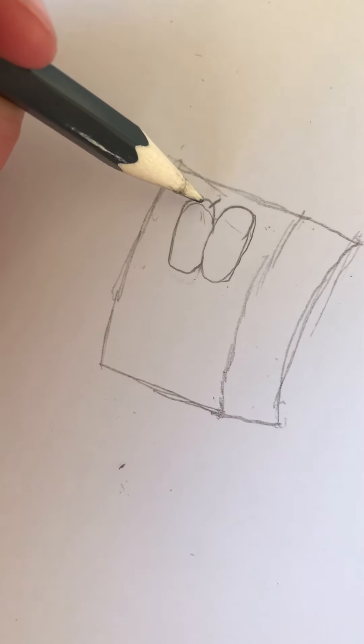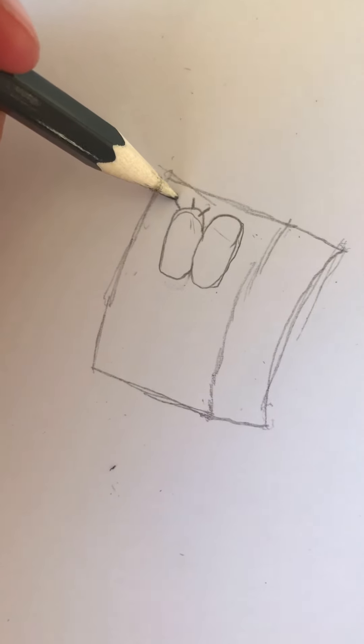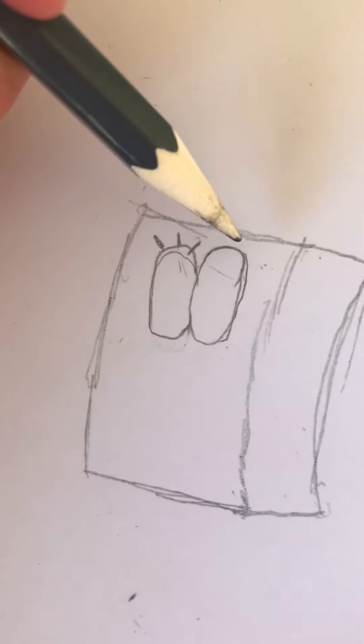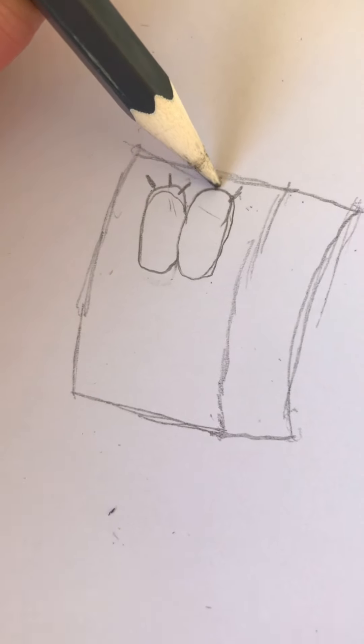Next, if you don't know, SpongeBob has three eyelashes on top of his eyes. So you want to do those. Sorry, mine's kind of bad because I'm drawing off the camera. I'm watching on the camera. But you want to do like three lines like that.